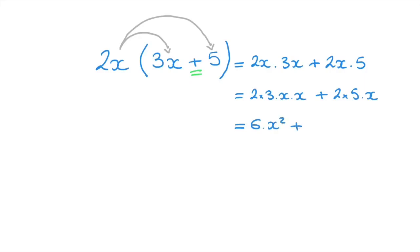Plus 2 times 5, which is 10, times x — so that's 10x. And we're done. We've just opened up this pair of parentheses using the distributive rule, giving us 6x squared plus 10x.